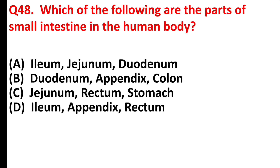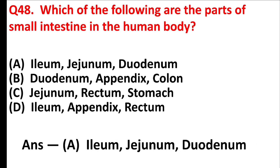Which of the following are the parts of the small intestine in the human body? Answer is option A: Ileum, Jejunum, Duodenum.